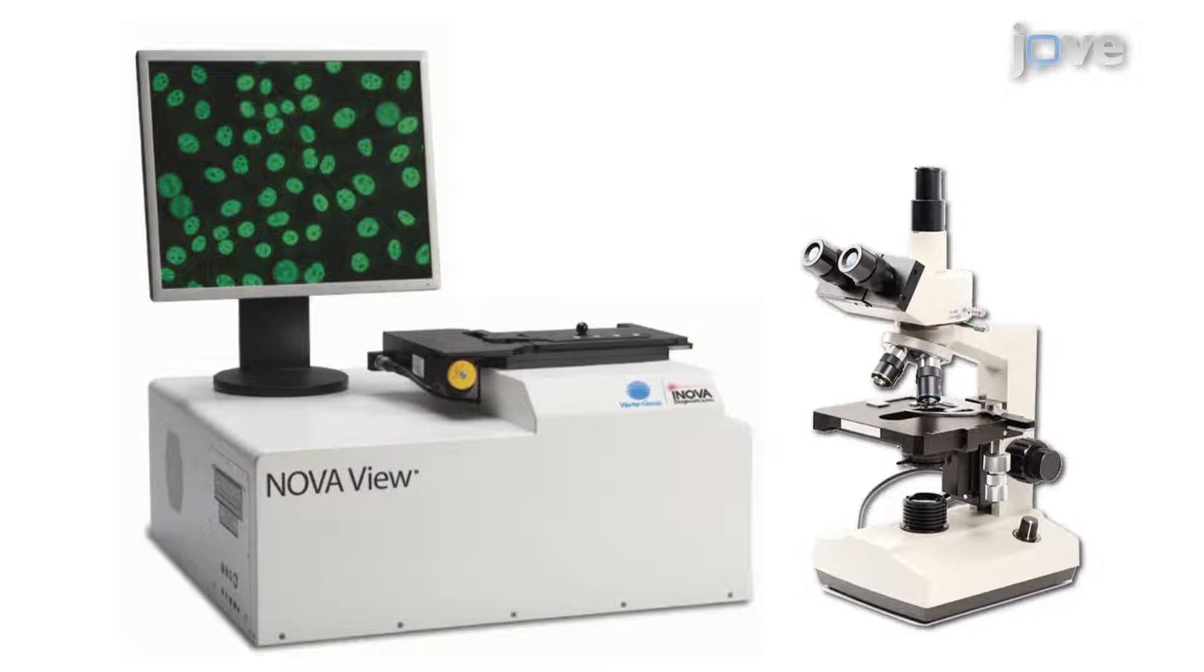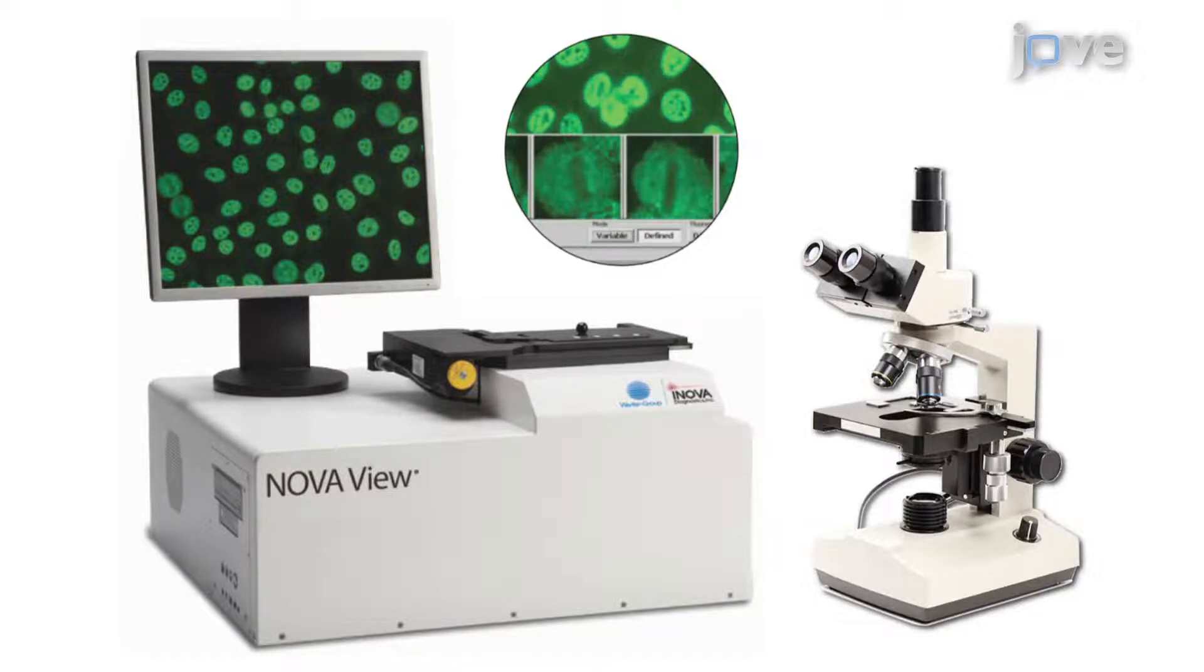When viewed through a fluorescence microscope, autoantibody positive samples will exhibit an apple-green fluorescence corresponding to areas of the cell or nuclei where autoantibody has bound in a pattern of fluorescence indicative of the antigen being present.